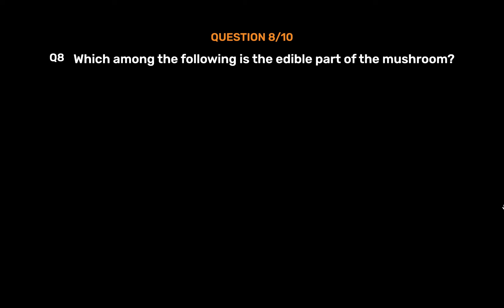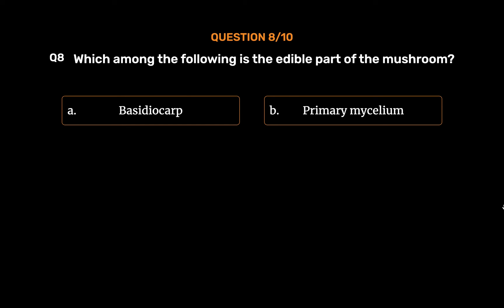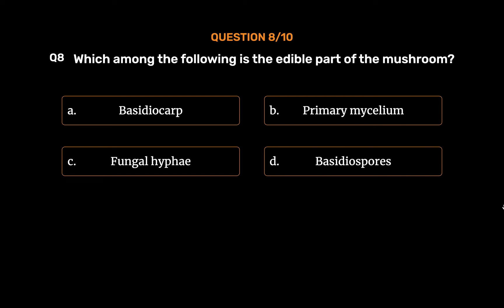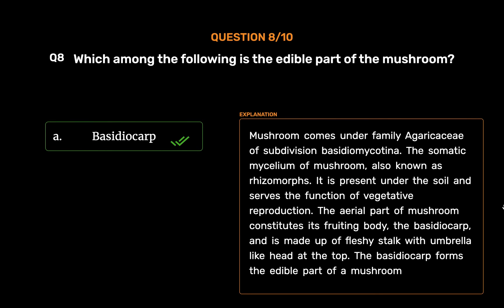Question No. 8. Which among the following is the edible part of the mushroom? Option A: Basidiocarp. Option B: Primary mycelium. Option C: Fungal hyphae. Option D: Basidiospore. The correct answer is Option A: Basidiocarp. Mushroom comes under family Agaricaceae of subdivision Basidiomycotina. The somatic mycelium of mushroom, also known as rhizomorphs, is present under the soil and serves the function of vegetative reproduction. The aerial part of mushroom constitutes its fruiting body, the Basidiocarp, and is made up of a fleshy stalk with an umbrella-like head at the top. The Basidiocarp forms the edible part of a mushroom.